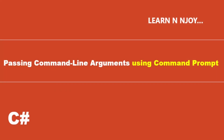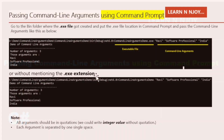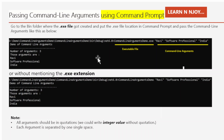Passing command line arguments using command prompt. First we need to open a command prompt — go to Run, type cmd, and it will open the command prompt. Once the command prompt is open, we need to navigate to the path where the exe file is available: D:\demo\CommandLineArgumentsDemo\bin\debug\net6.0, and that's where this exe file is located.